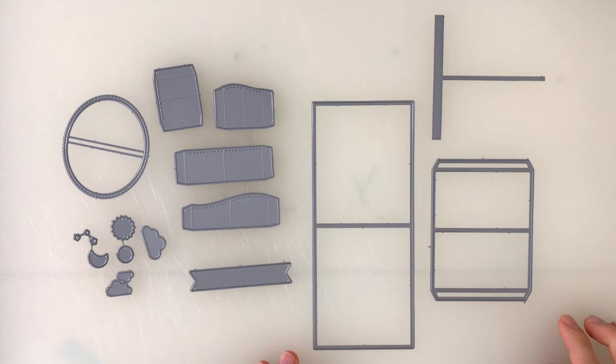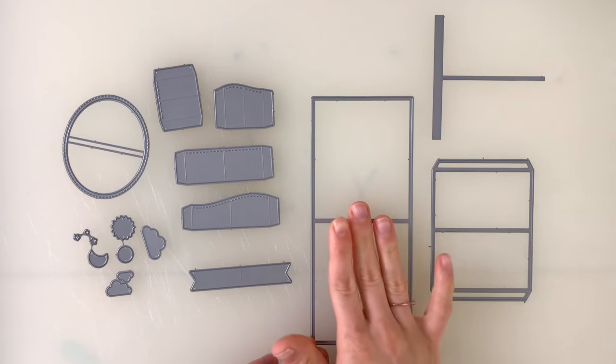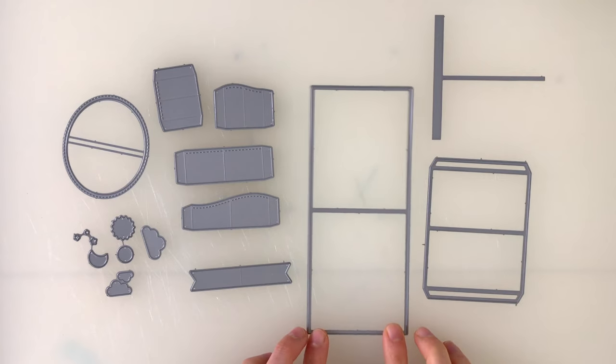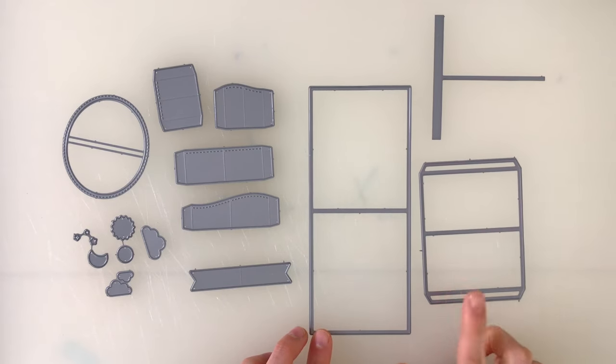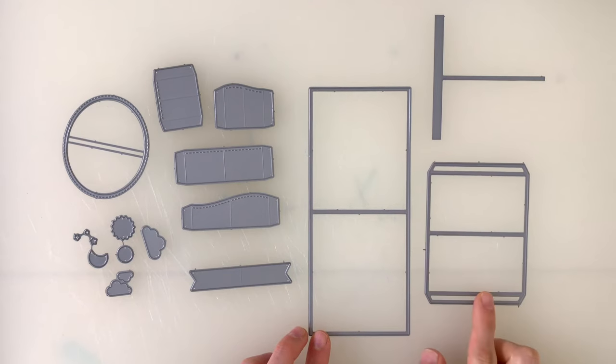I have all of the dies from the center picture window die set laid out here on my desk. One of the main elements is the card panel, so we're going to use that to build our center picture window. This little tabbed panel is the element that creates the 3D effect.